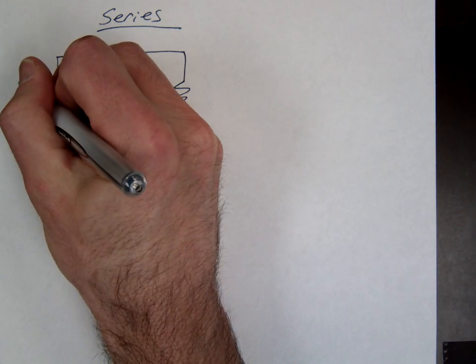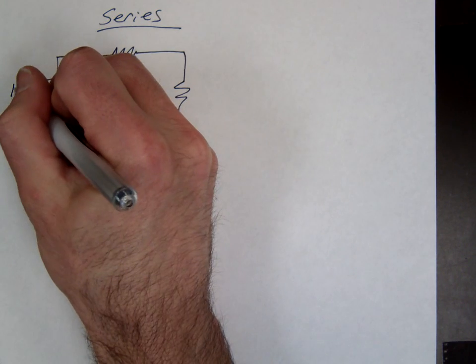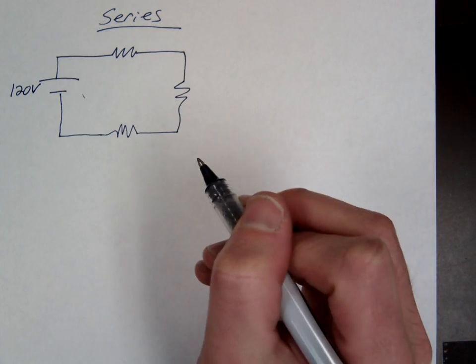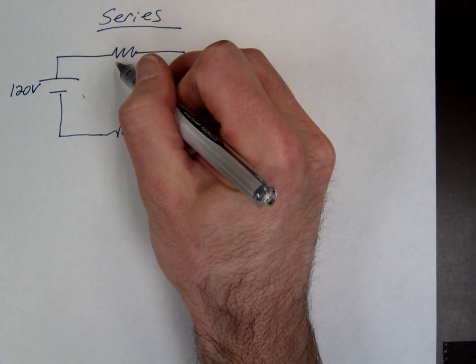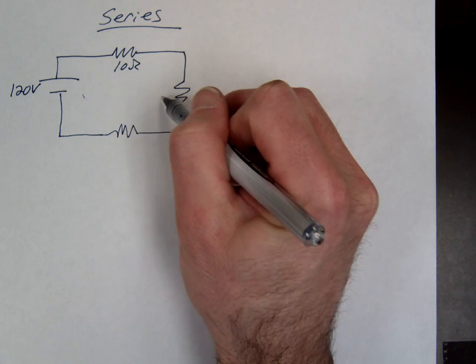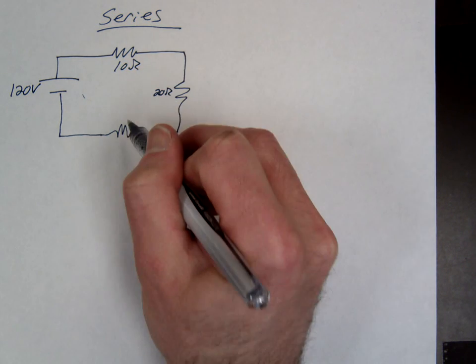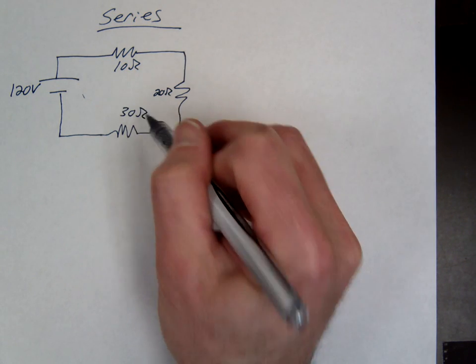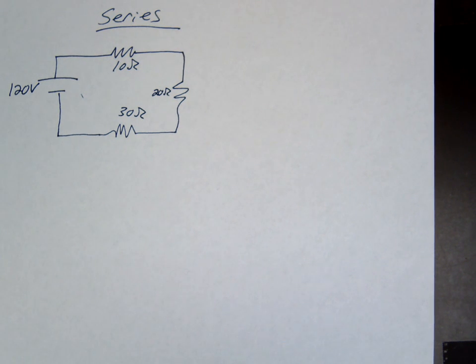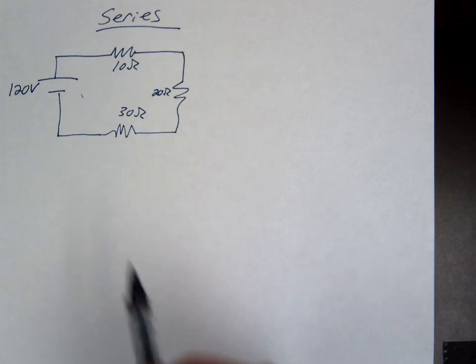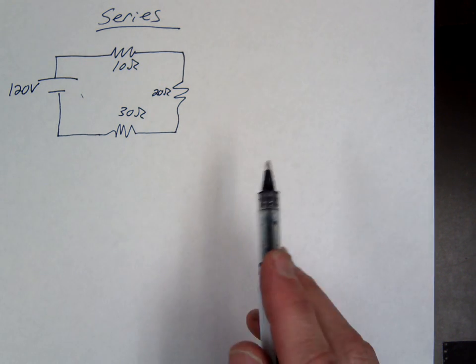Let me go ahead and put some numbers here. Let's say this is 120 volts. Let's say this is a 10 ohm resistor, 20 ohm resistor, 30 ohm resistor. So in the circuit as is, this would be a challenging thing to try to figure out, to try to solve.